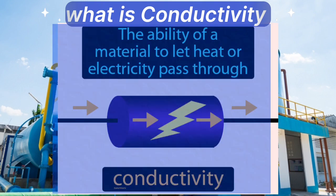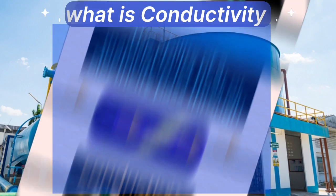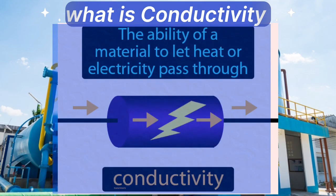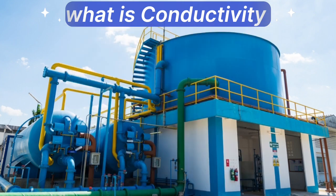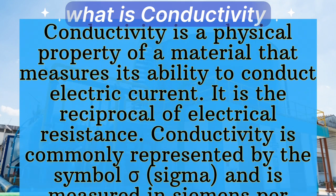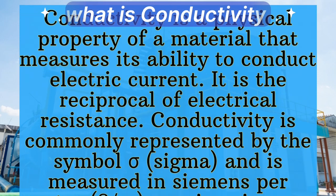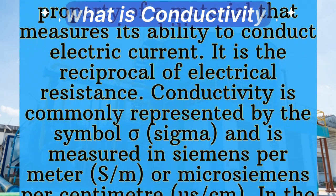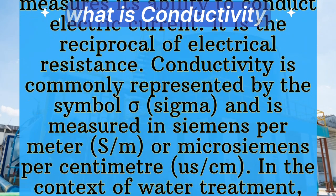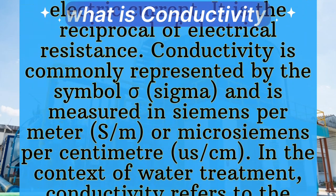Conductivity is a physical property of a material that measures its ability to conduct electric current. It is the reciprocal of electrical resistance. Conductivity is commonly represented by the symbol sigma and is measured in siemens per meter or microsiemens per centimetre.